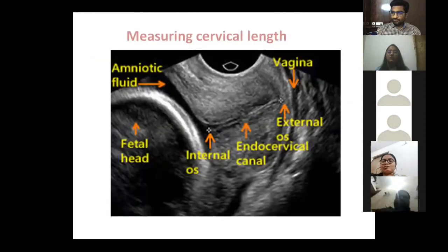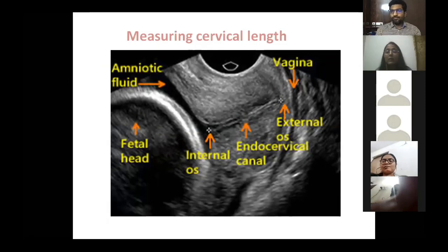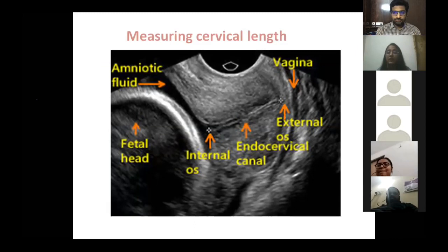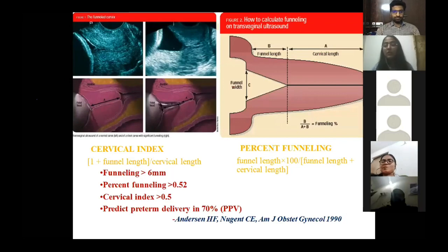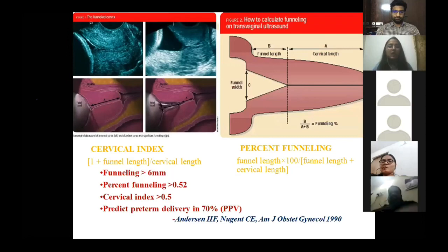Various methods for cervical length assessment exist — transabdominal, transvaginal, and transperineal — but transvaginal is the preferred modality. You place the probe in the anterior fornix, magnify the screen to about 75 percent, visualize the external os, internal os, and endocervical canal, and measure using the trace method. Funneling is noted but not included in the cervical length measurement; cervical index and percentage funneling are no longer used.